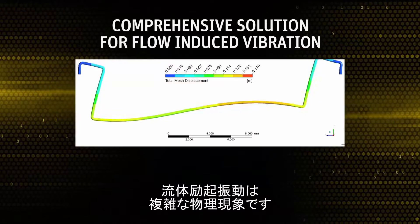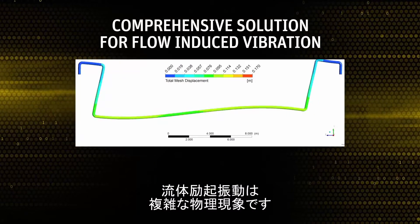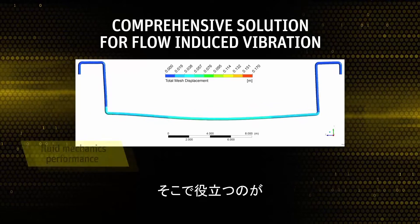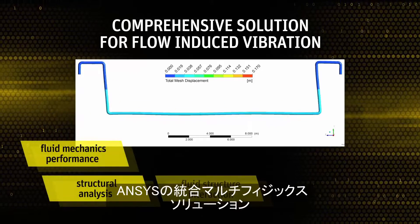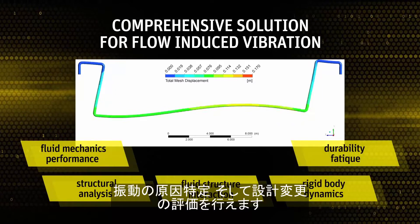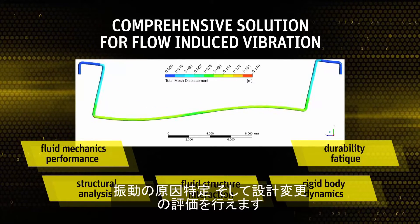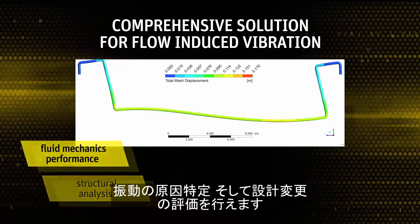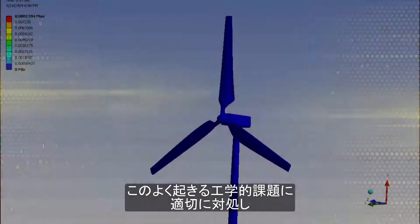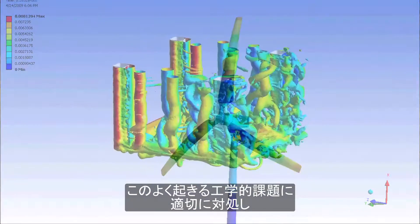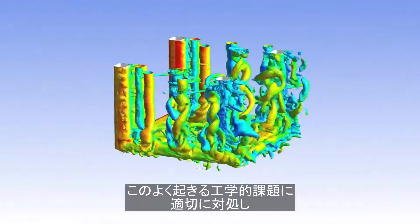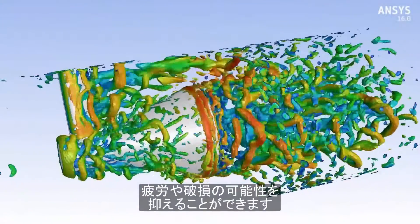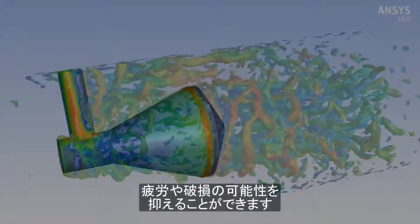Flow-induced vibration — a complex physical phenomenon. ANSYS Integrated Multi-Physics Solutions can identify possible sources of vibration and assess design changes. Engineers can better manage this commonly occurring engineering challenge, reducing the potential for fatigue and failure.